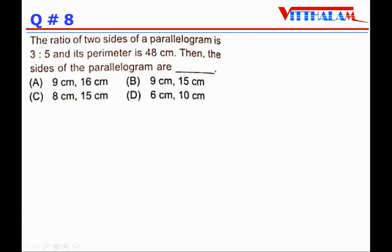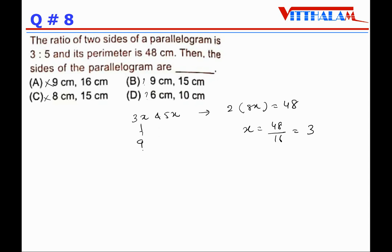The ratio of two sides of a parallelogram is 3:5 and its perimeter is 48 cm. Let the sides be 3x and 5x. Perimeter of parallelogram = 2(3x + 5x) = 2 × 8x = 16x = 48, so x = 3. Therefore the sides are 3×3 = 9 cm and 5×3 = 15 cm. Answer is B.